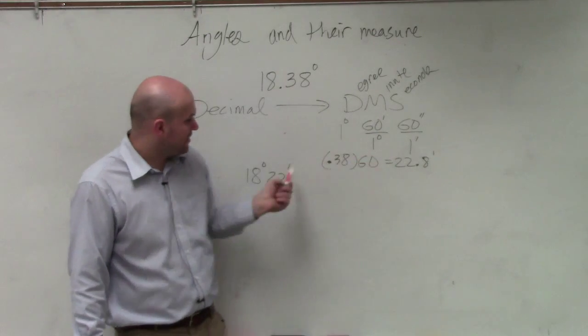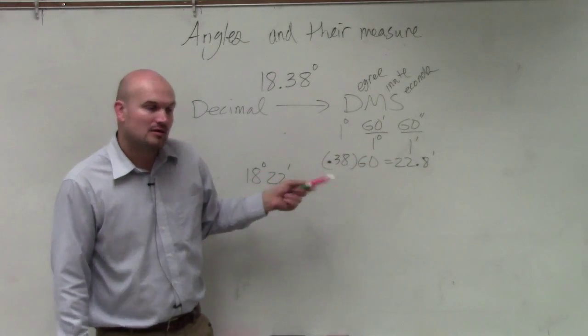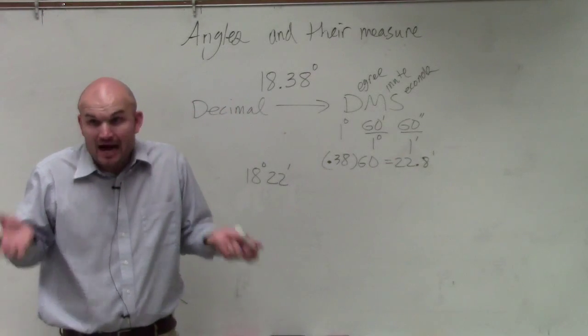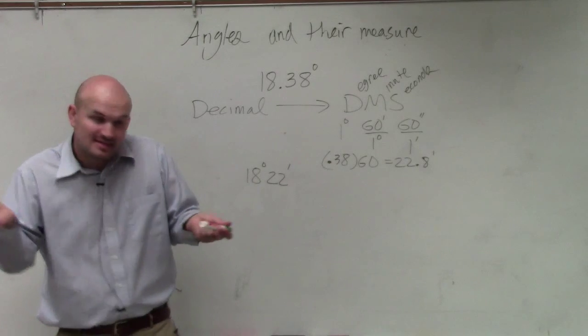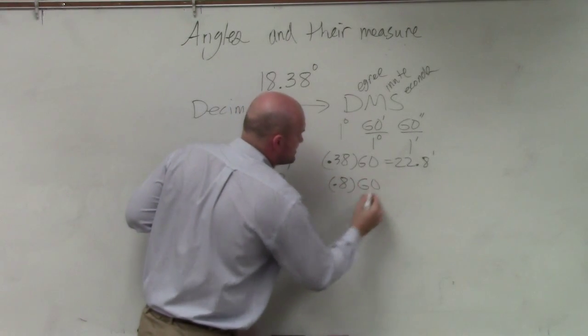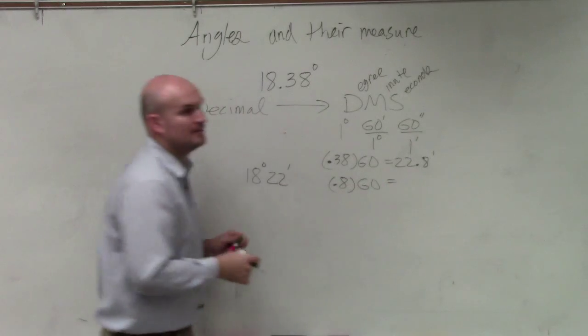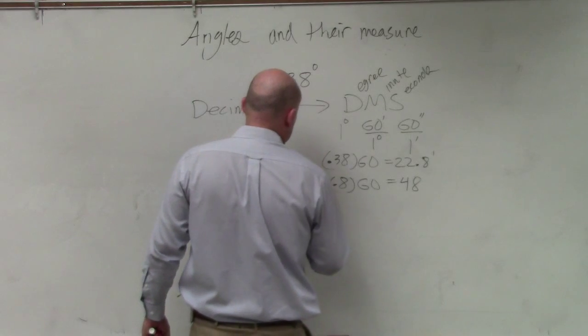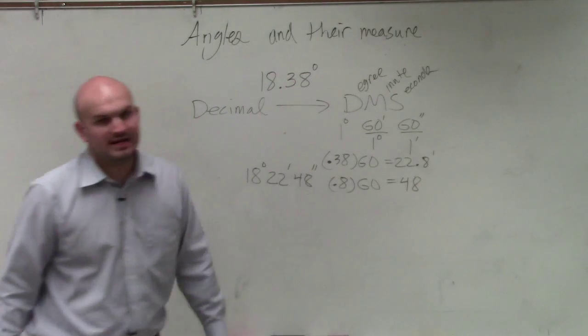Now I need to figure out how many seconds there are. So there's 0.8 of a minute, right? 0.8. How many seconds are in a minute? 60. So you're going to do 0.8 times 60. And that gives you 48. So there's 48 seconds.